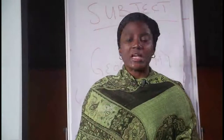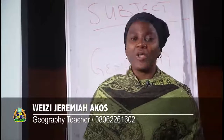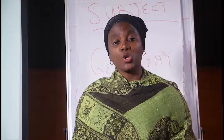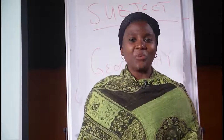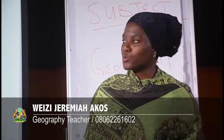The next thing we'll be looking at is types of surveying. We have six types of surveying: chain surveying, traverse surveying, aerial surveying, triangulation surveying, plane table surveying, and hydrographic surveying. We'll be looking at these during the course of our lesson. However, we'll be stopping here today, but before we go, let's take a brief review of what we have done.